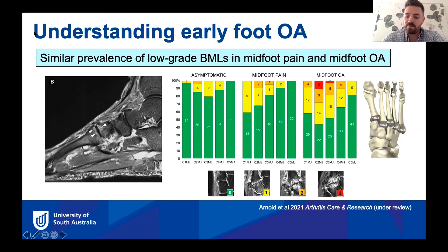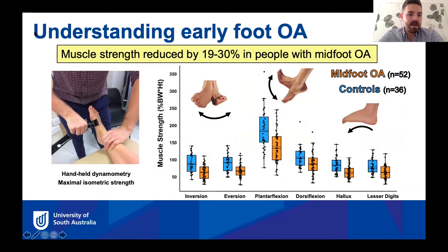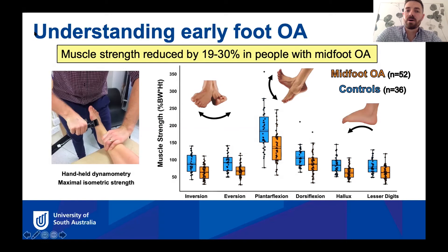Looking at patients clinically with foot osteoarthritis, it's assumed that they will be weak in terms of muscle strength. We know this is a feature of people with hip and knee OA, and we've also found this in our work with people with midfoot OA. This graph shows that the strength of different muscle groups around the foot and ankle is reduced by somewhere between 19% to 30% in people with midfoot OA. We know that muscle strengthening is a really important part of treatment for people with knee and hip OA, and our work suggests this may also be the case for midfoot OA — which we hope to follow up with some interventional work.